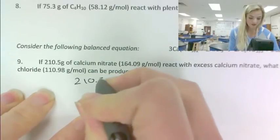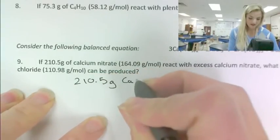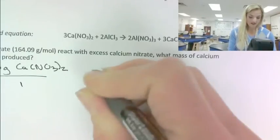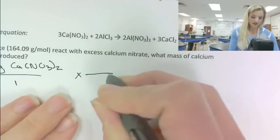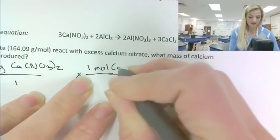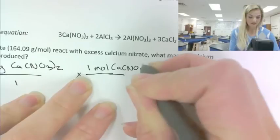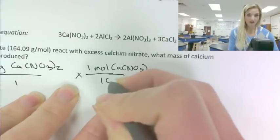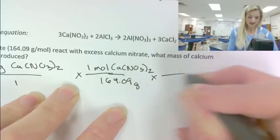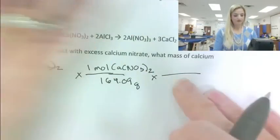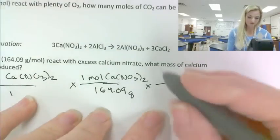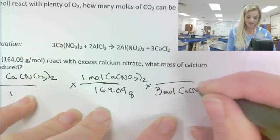And so we kind of talk ourselves through this. If I start with 210.5 grams of calcium nitrate, and I'm going to go to moles of calcium nitrate. And so moles will go on top, one mole of calcium nitrate, and it has a mass of 164.09. And then my mole ratio, using the balanced equation up here, I have three moles of calcium nitrate to three moles of calcium chloride.